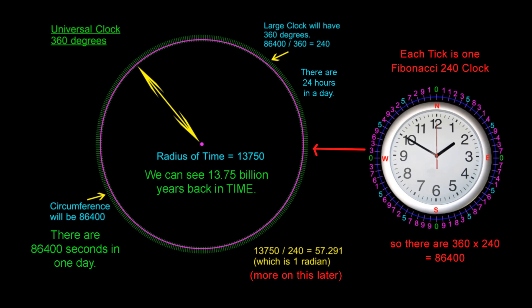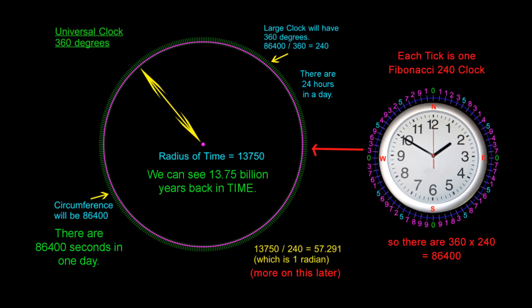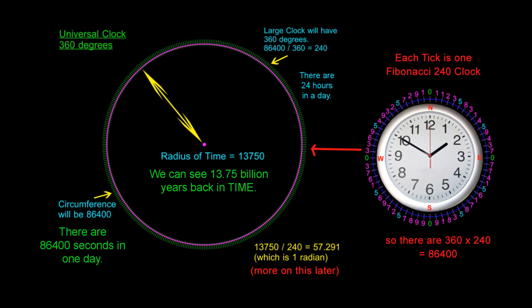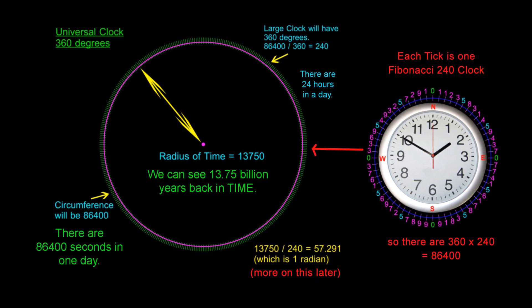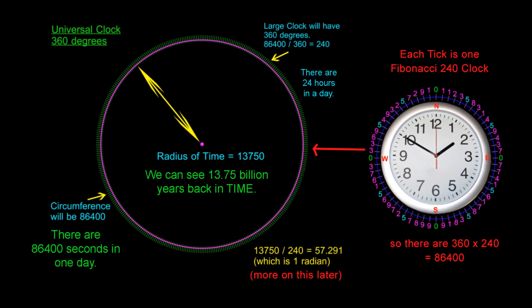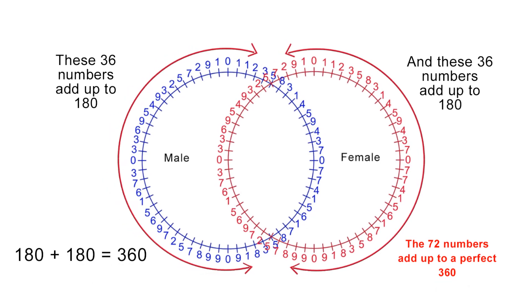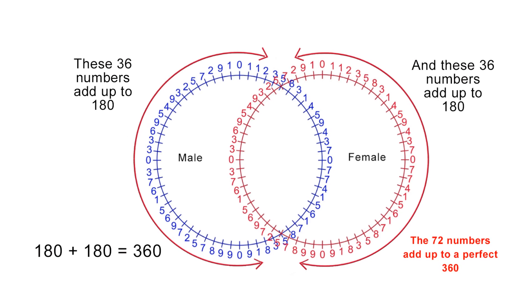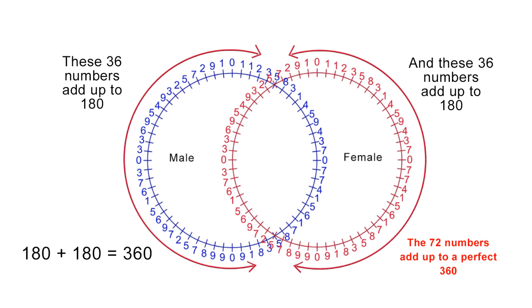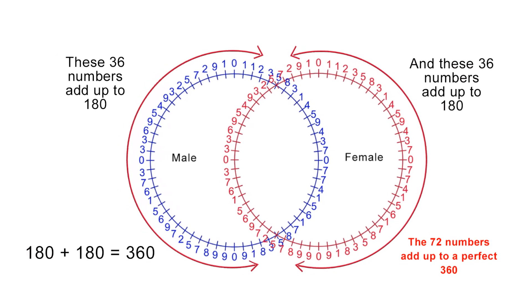I have calculated the radius of space-time as being 13,750 units using only the Fibonacci 60-digit clock as a foundation. First, we used the Fibonacci clock to generate the number 360 as seen in the Vesica Pisces. This gave us our 360 degrees.